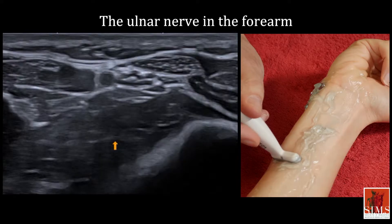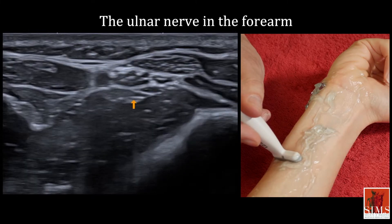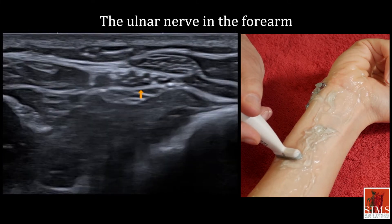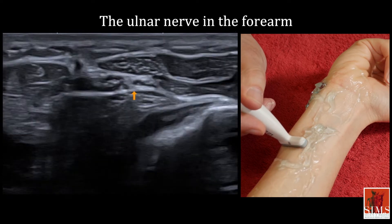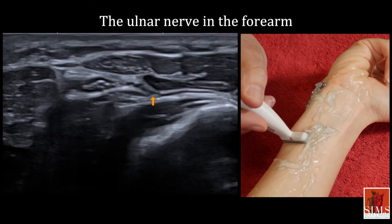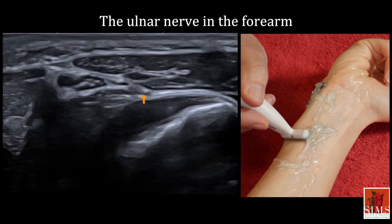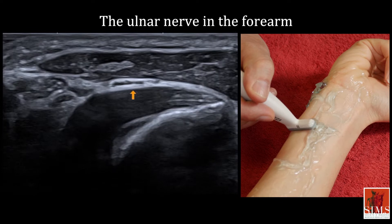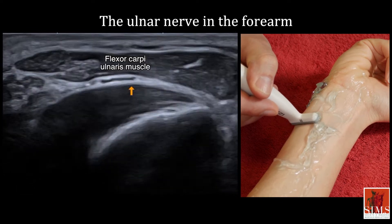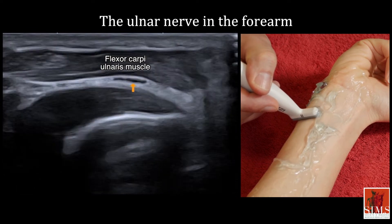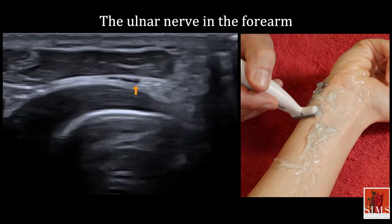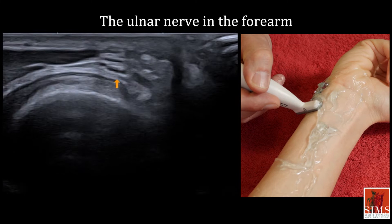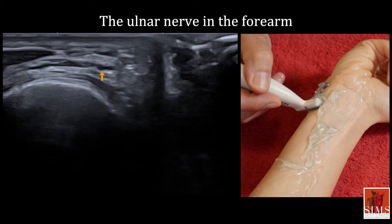In the forearm, the ulnar nerve splits into two main sensory branches, including a dorsal cutaneous sensory branch which can be seen here, emerging and heading posteriorly and subcutaneously.